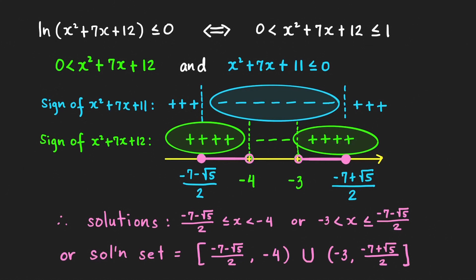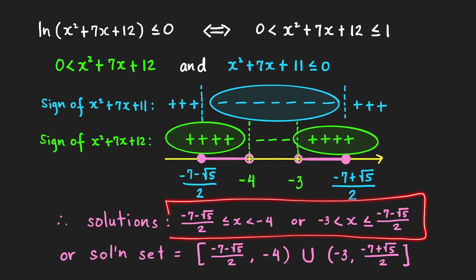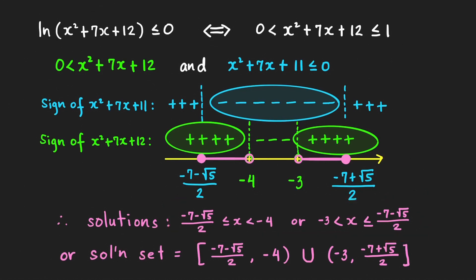In inequality notation we can express the solution accordingly. In interval notation, the answer is the union of two half-open intervals: one including the left endpoint but excluding the right, and the other excluding the left endpoint but including the right. This is the answer to our problem.